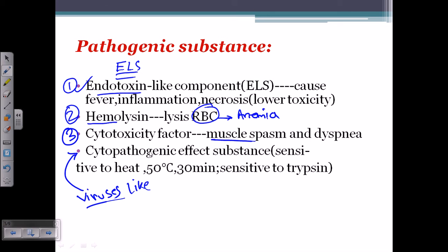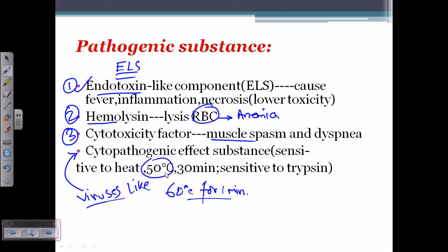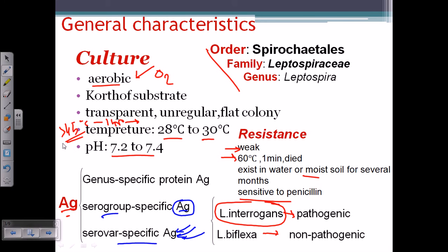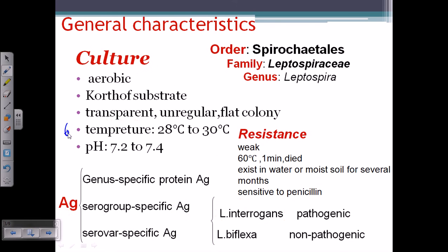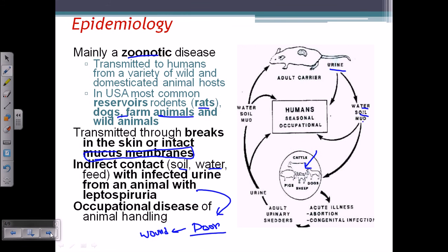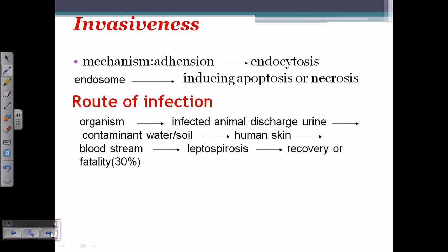The cytopathogenic effect is sensitive to heat. At 50 degrees Celsius for 30 minutes, some will survive, but at 60 degrees Celsius for one minute they are killed. To clarify an earlier statement: the bacteria are killed at approximately 60–65 degrees Celsius within one to five minutes — not simply at temperatures above 45°C.